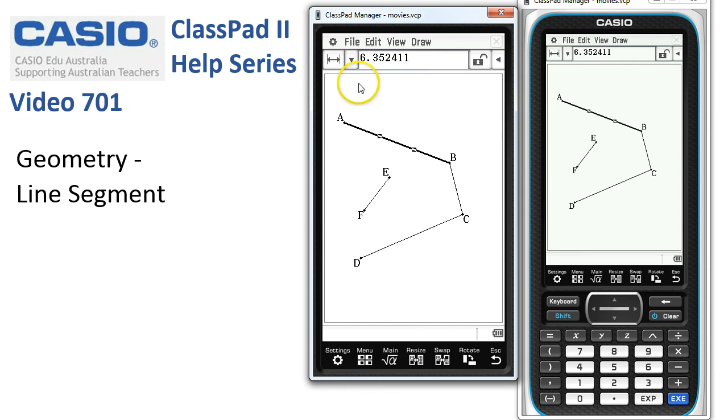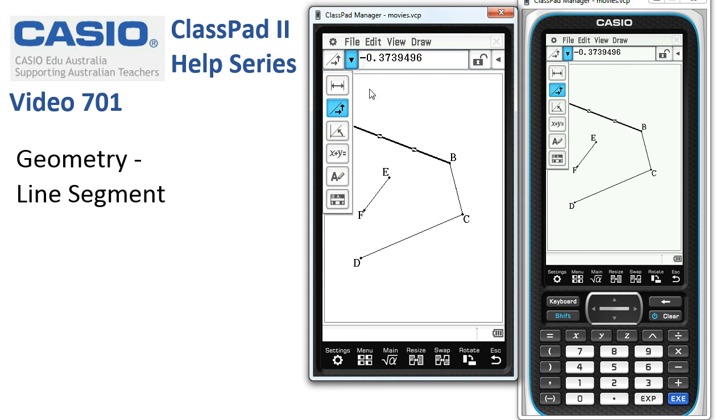However, we can also investigate a few other things. From the menu here, we could instead of choosing the length, we could choose the gradient of the line, which in this case is being displayed here, or we could choose to display the equation of the line.